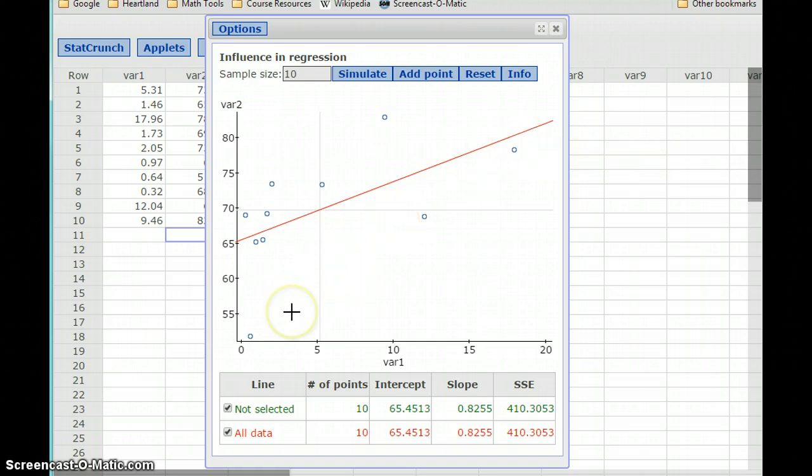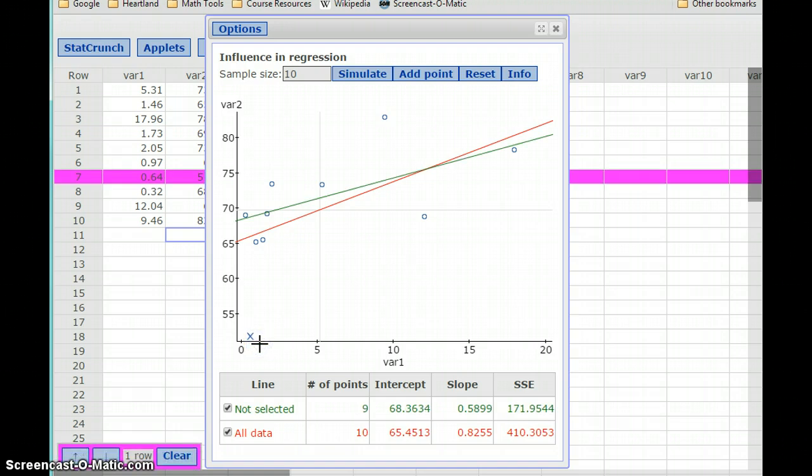Back to this idea of influence, though, we see a point down here that really doesn't fit well with the rest of that pattern. It's pretty far off from the rest of those values. So, we can click and drag over this point. It'll get X'd out. And now, a new regression model, a new line of best fit is constructed, removing that data point.